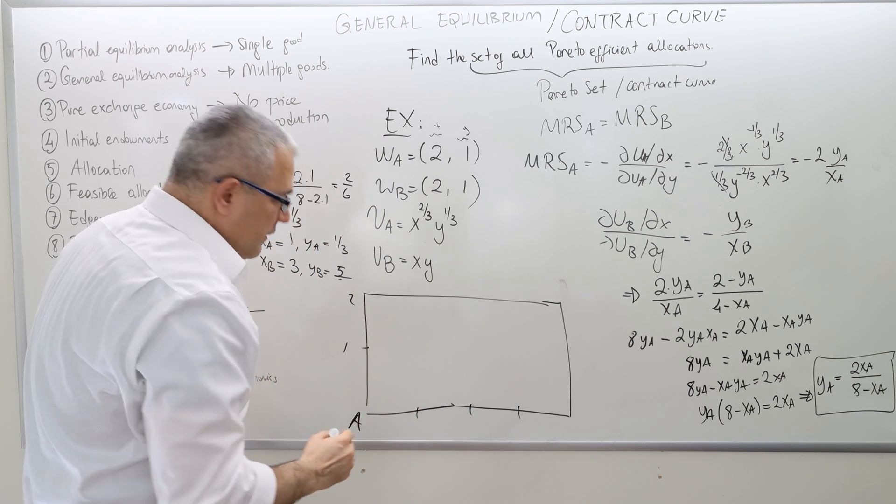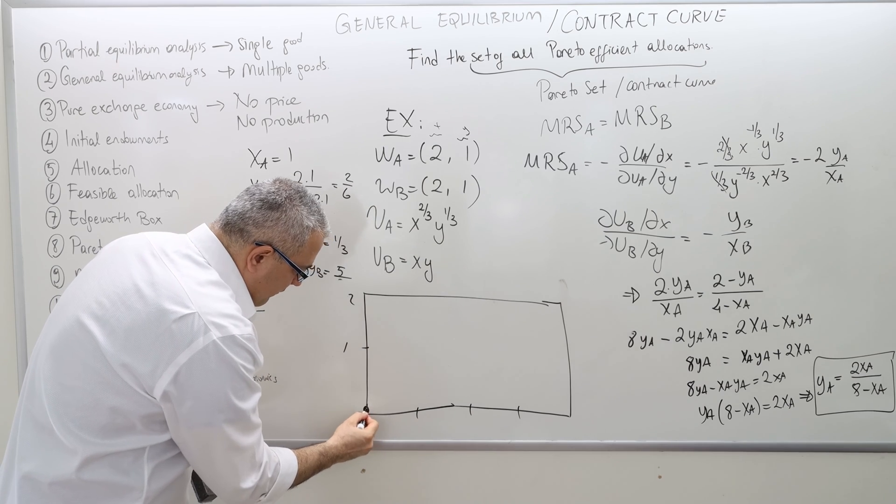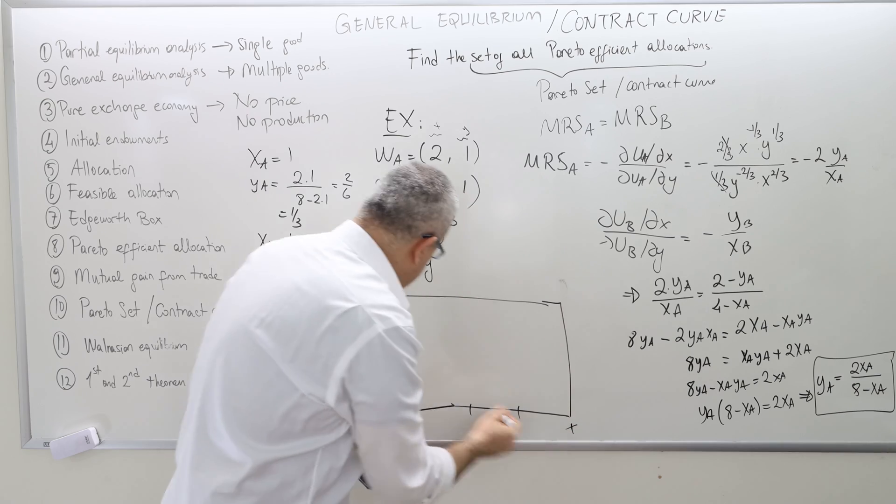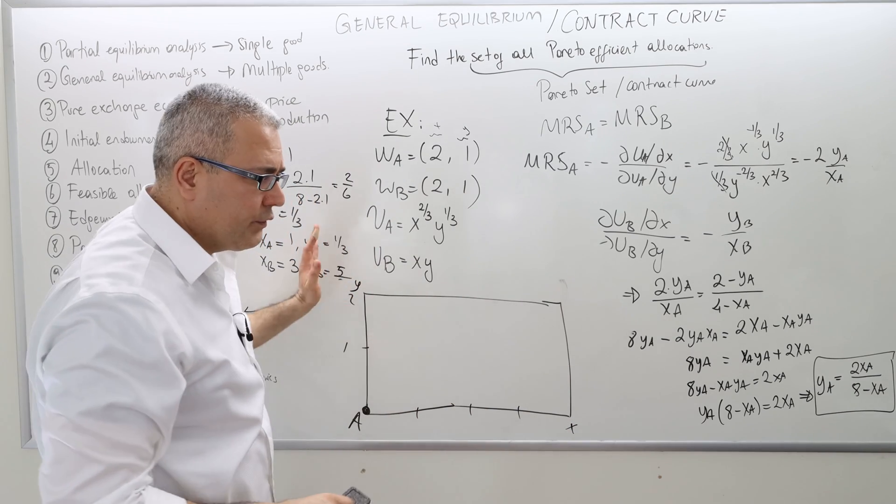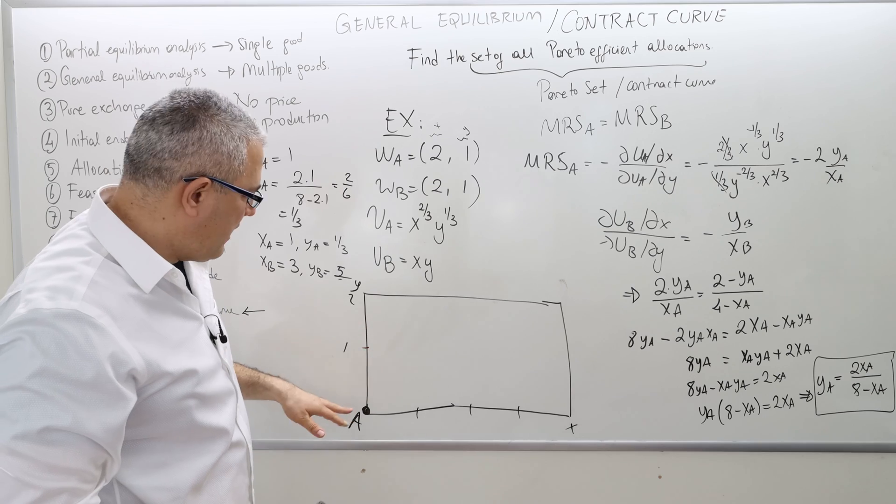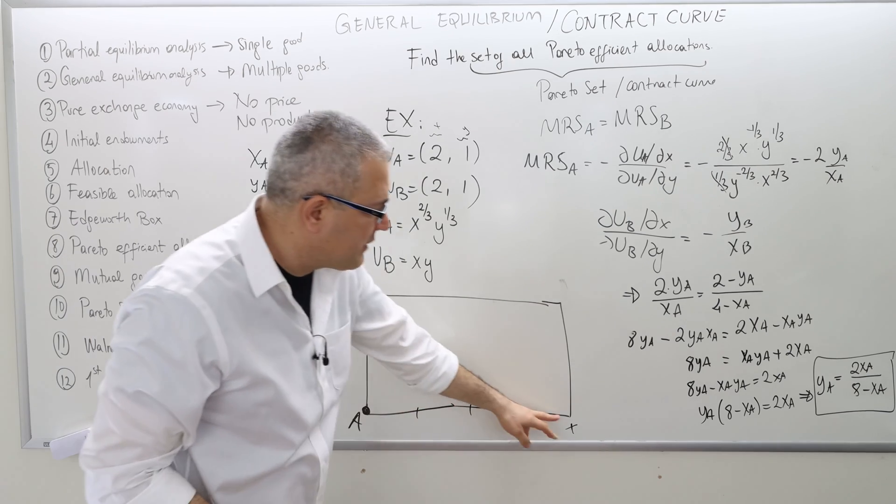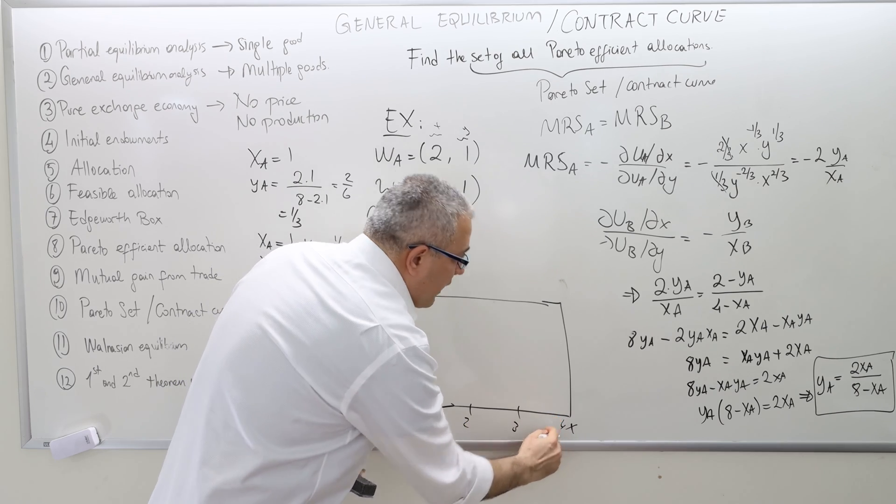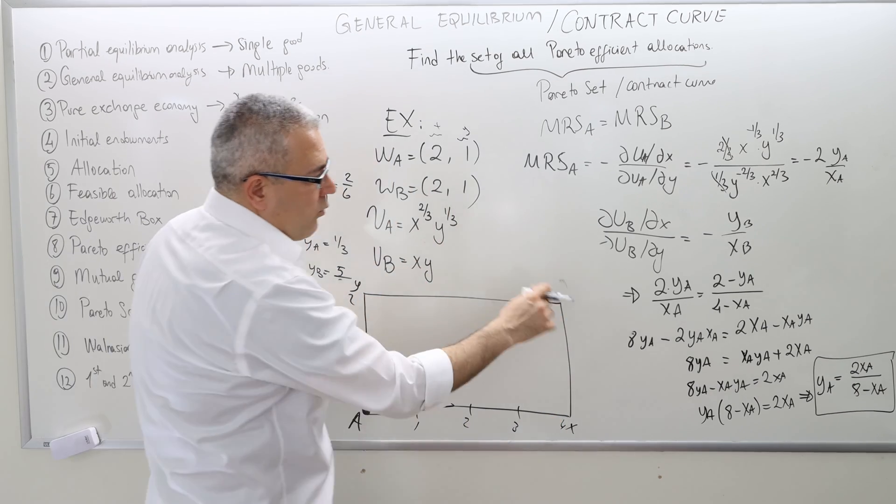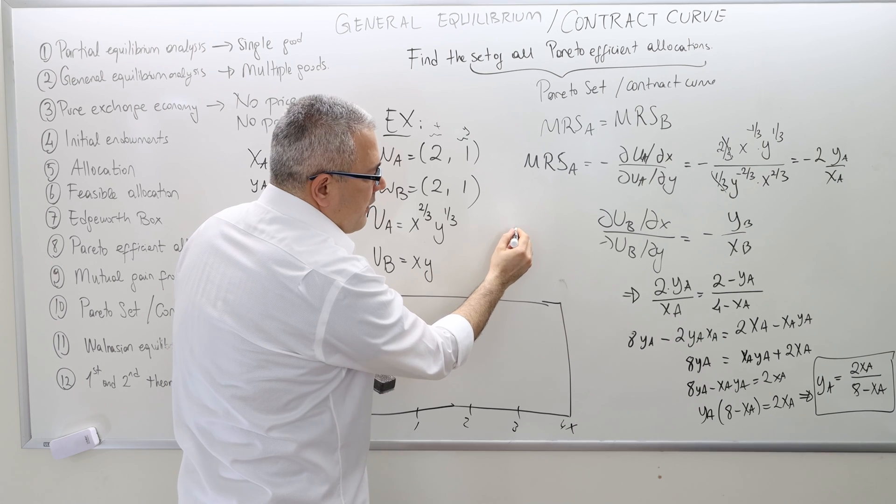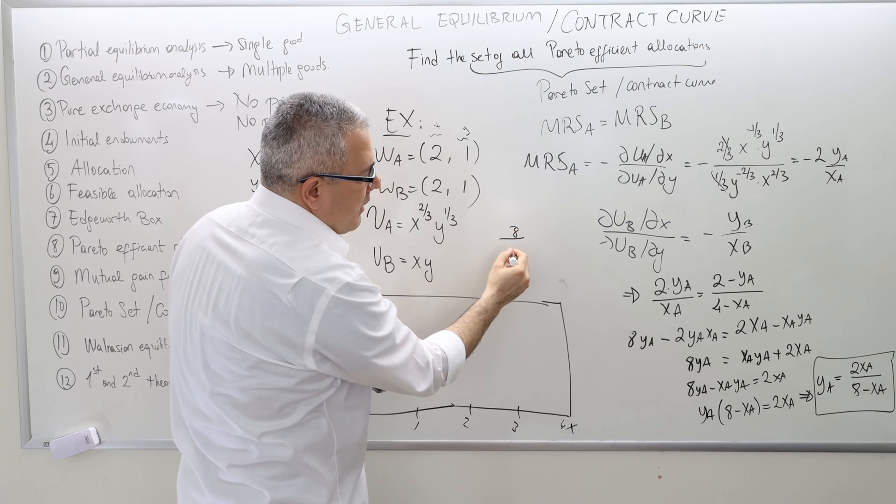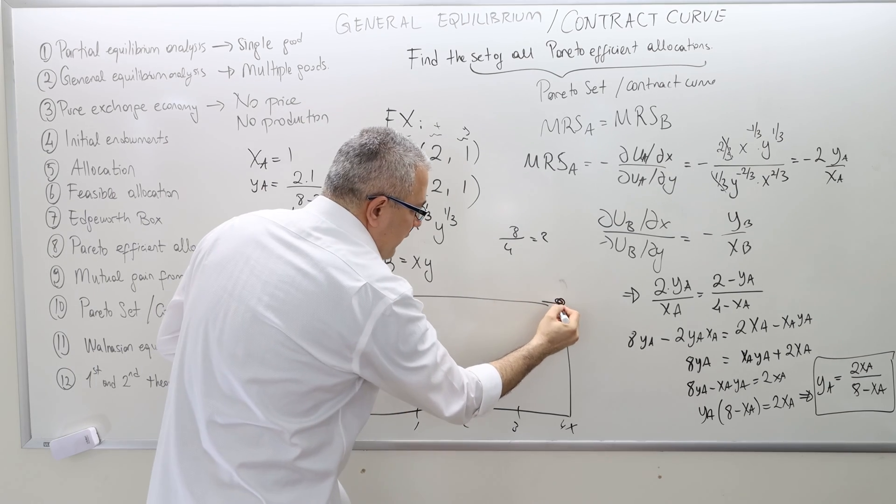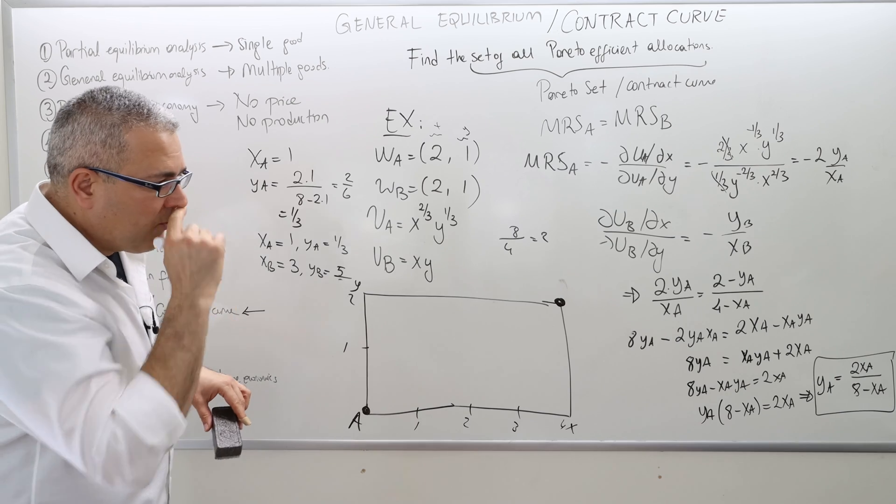So the 0, 0 is Pareto-efficient. If x_A, so this is x, this is y, good 1, good 2. And then if x_A is, for example, 1, 2, 3, 4 at most. So if it is 4, y_A is going to be 8 divided by 4, which is 2. So therefore, this point is also Pareto-efficient.